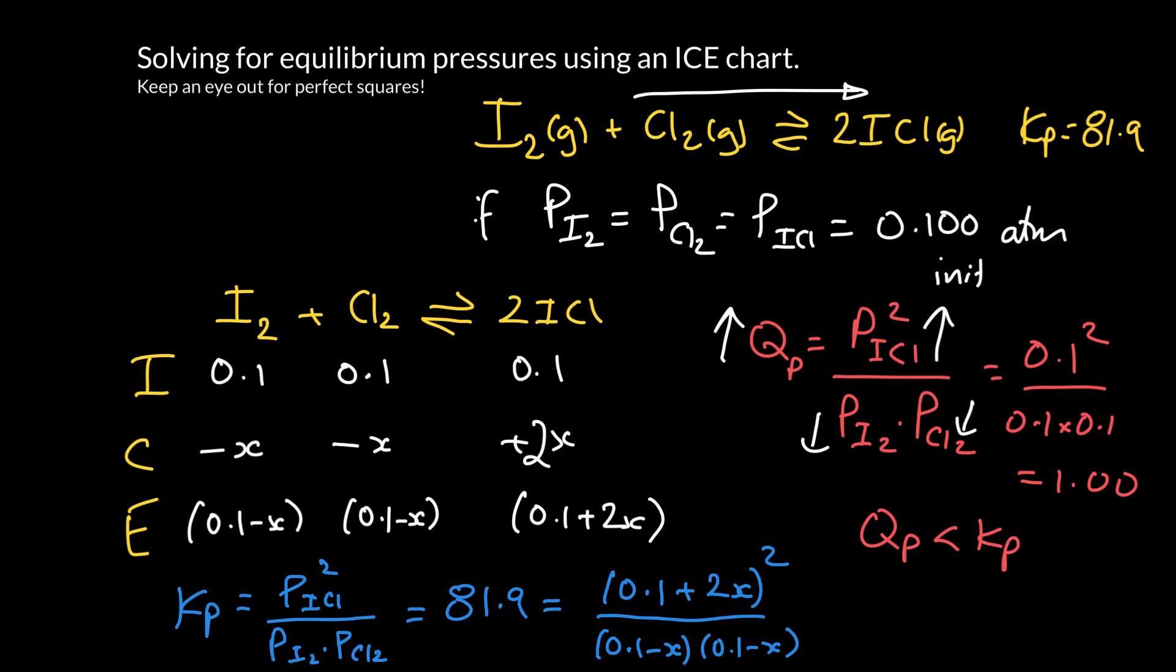Now you might be saying, oh no, this is a quadratic equation, so we need to expand that. We'll get powers of X that go to the second power. It's a quadratic, but actually, it is a perfect square. And if it's a perfect square, that means that instead of using the quadratic equation, we can just square root both sides, and that is way easier.